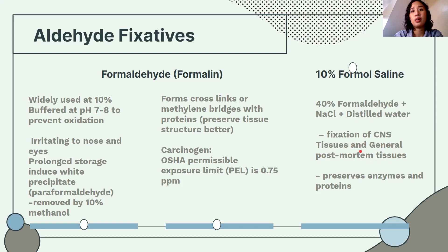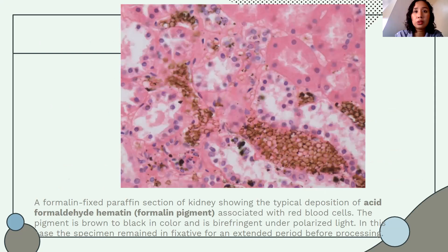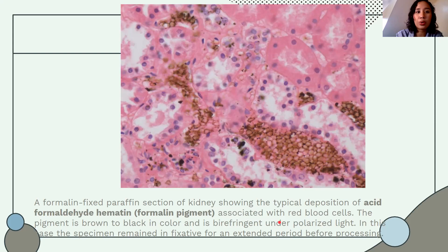This is a formalin-fixed paraffin section of kidney showing typical deposition of acid formaldehyde hematin — also called formalin pigment — which is a brown to black deposit under polarized light. This artifact forms when formaldehyde comes in contact with hemoglobin.